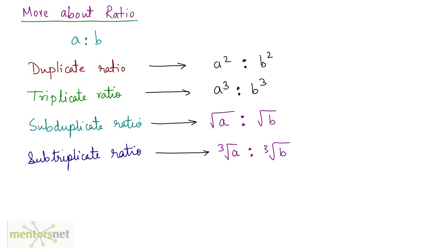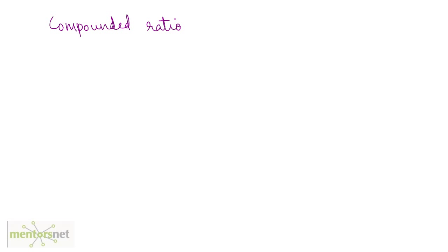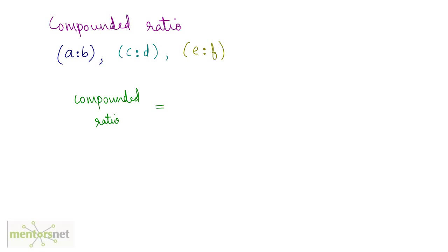Another important term is the compounded ratio. If you have three ratios — say a:b, c:d, and e:f — the compounded ratio is the ratio of the products of their first terms to their second terms. So the numerator is a×c×e and the denominator is b×d×f. More will be explained when we solve problems.